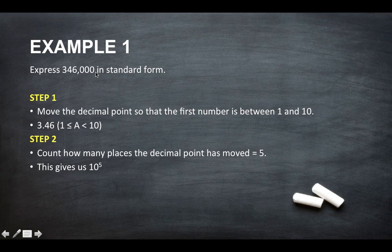So the decimal point in this number would be here. And to get to 3.46 we'd move it 1, 2, 3, 4, 5 spaces. So this gives us 10 to the power of 5.